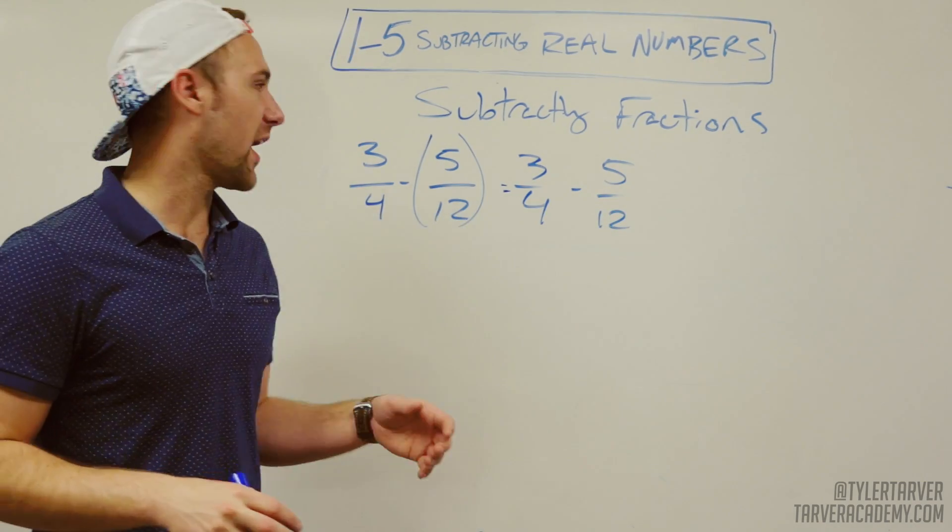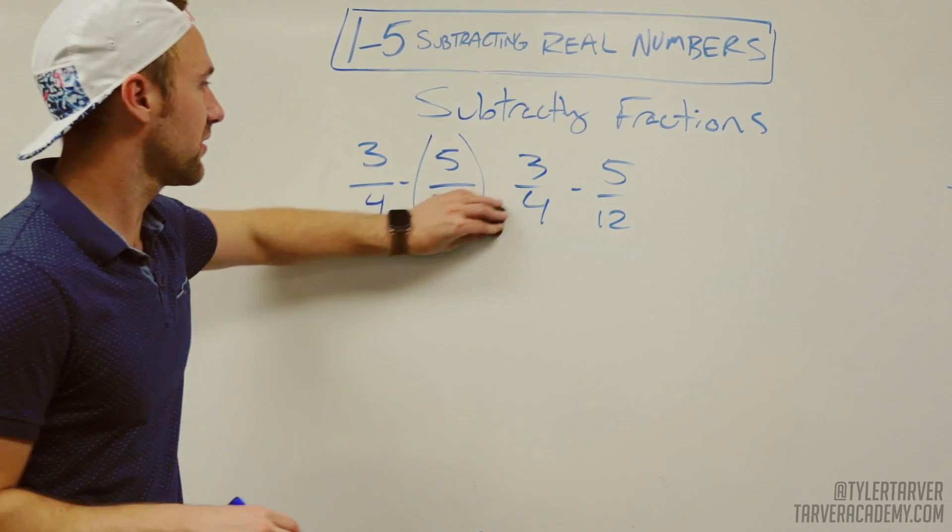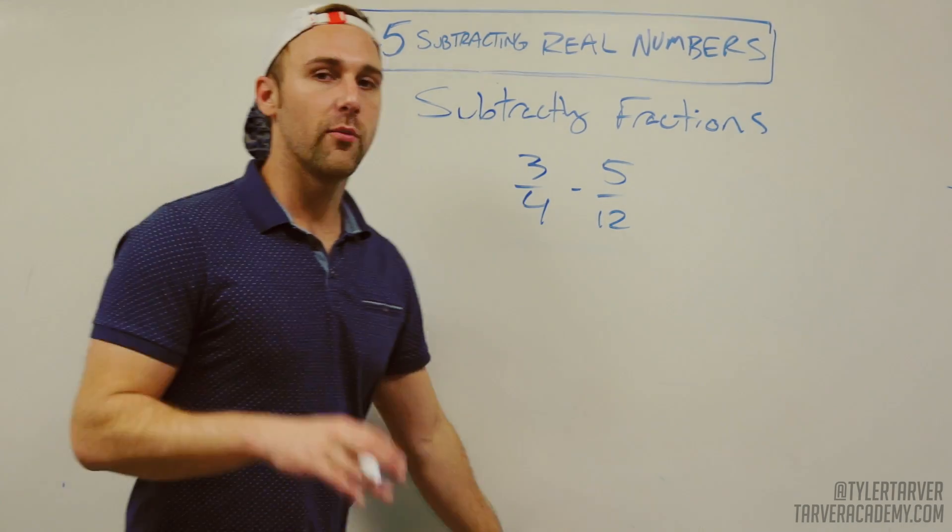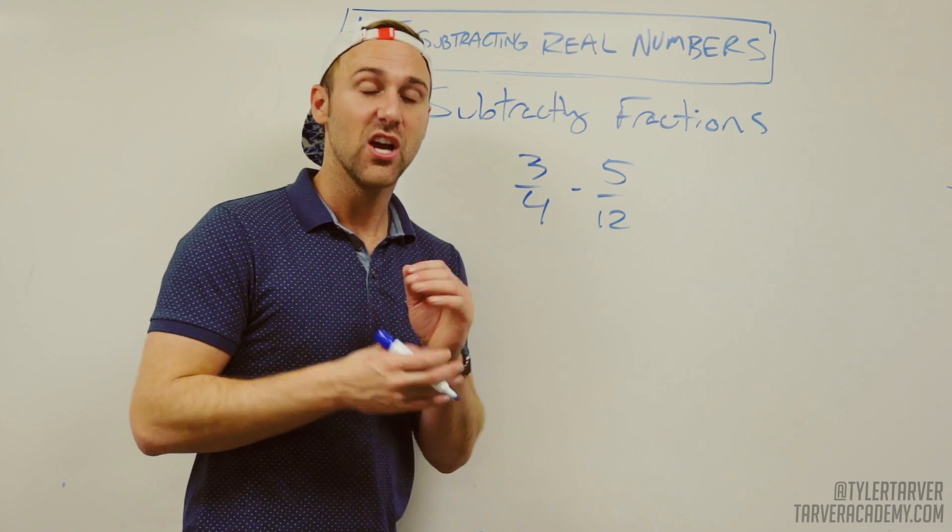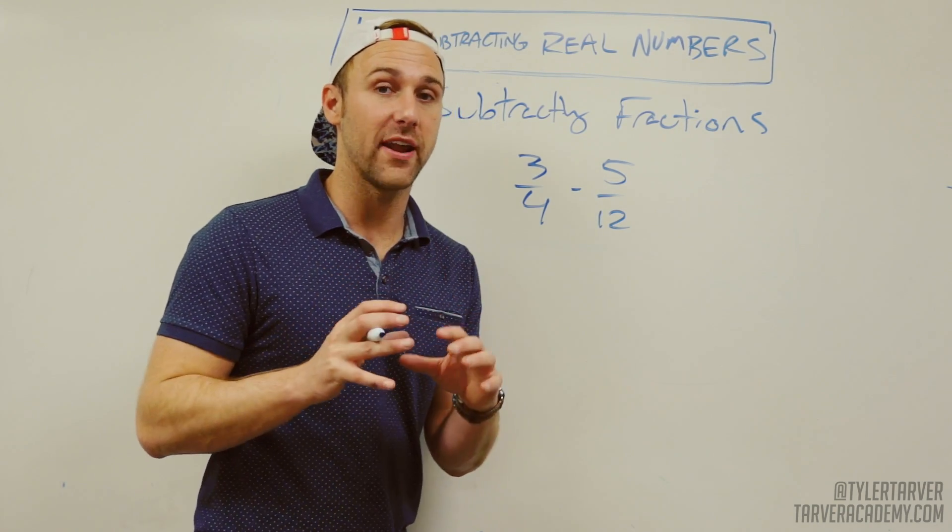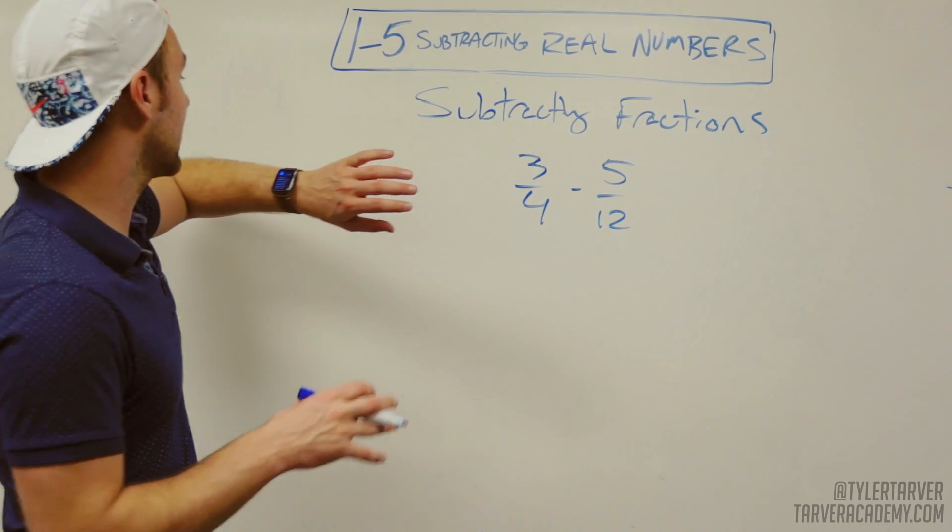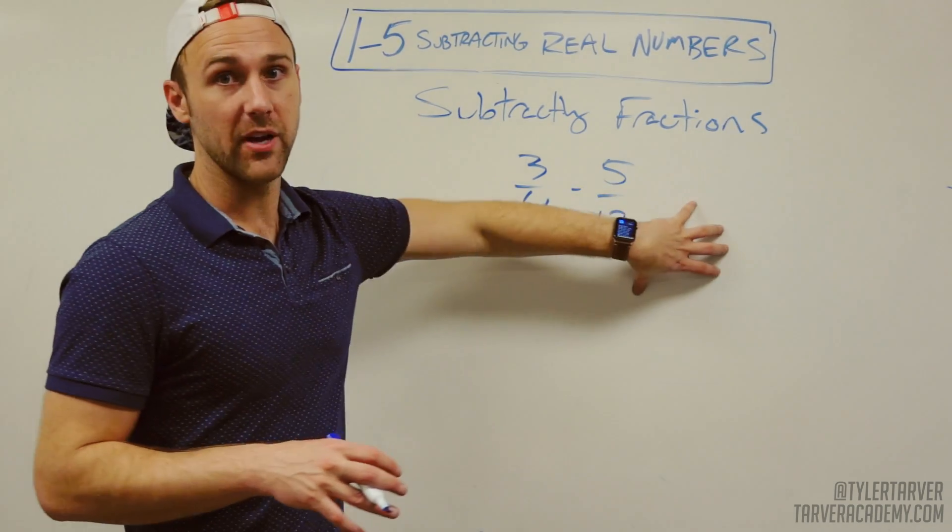Now, if you remember your rules of fractions—I'm going to erase this so you don't get confused—to add and subtract fractions, you have to have common denominators. That means you have to have the exact same bottom number.